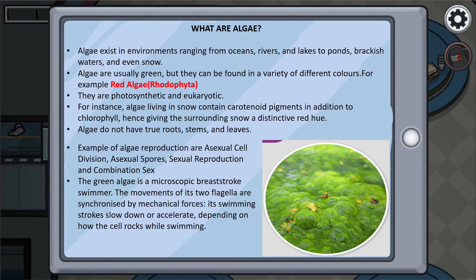What are algae? Algae exist in environments ranging from oceans, rivers, and lakes to ponds, brackish waters, and even snow. Algae are usually green, but they can be found in a variety of different colors. For example, red algae, also known as rhodophyta, are photosynthetic and eukaryotic. Algae living in snow contain carotenoid pigments in addition to chlorophyll, giving the surrounding snow a distinctive red hue.